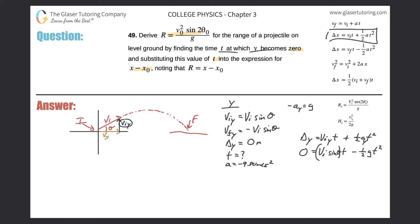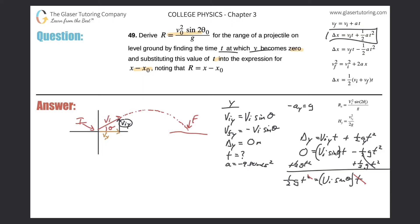Since the equation equals zero, we bring the ½gt² term to the other side: ½gt² = v_i · sin θ · t. There is a factor of t on both sides, so we cancel one t, giving: ½g · t = v_i · sin θ.